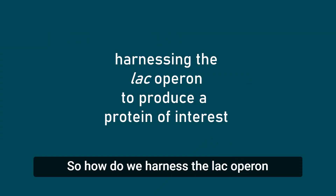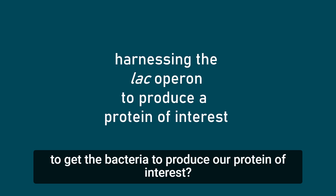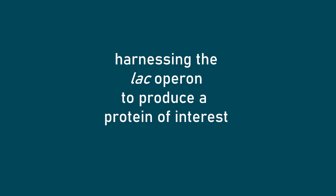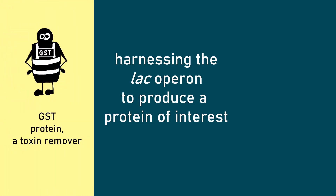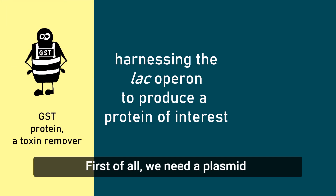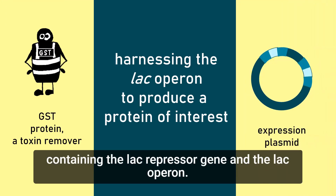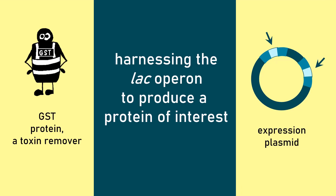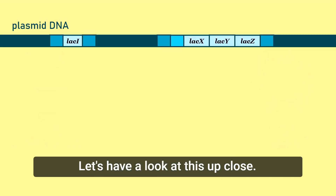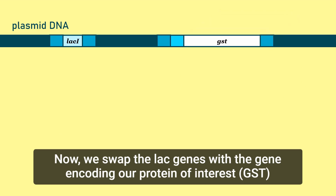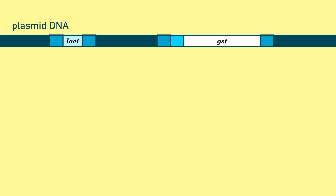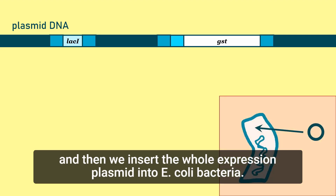So, how do we harness the lac operon to get the bacteria to produce our protein of interest? Let's suppose the protein we want to produce is GST. First of all, we need a plasmid containing the lac repressor gene and the lac operon. Let's have a look at this up close. Now, we swap the lac genes with the gene encoding our protein of interest, GST. And then we insert the whole expression plasmid into E. coli bacteria.